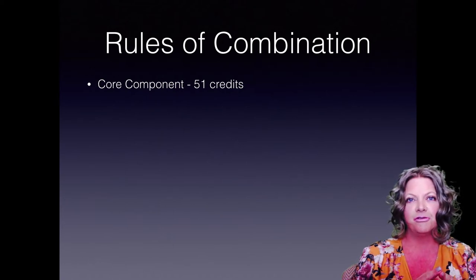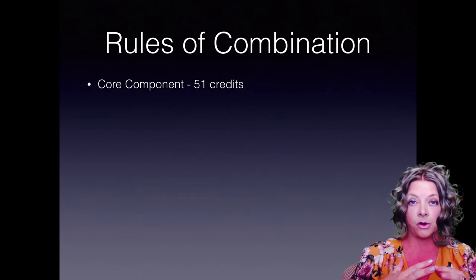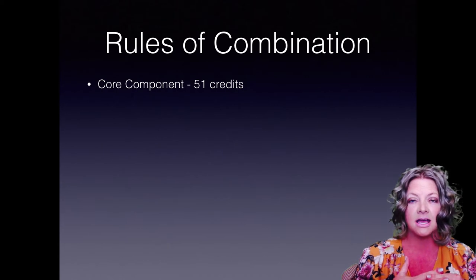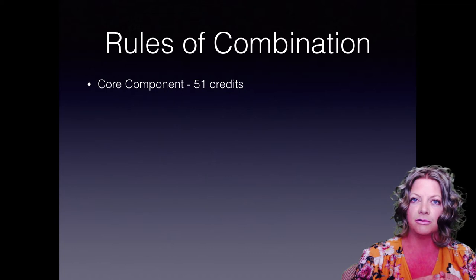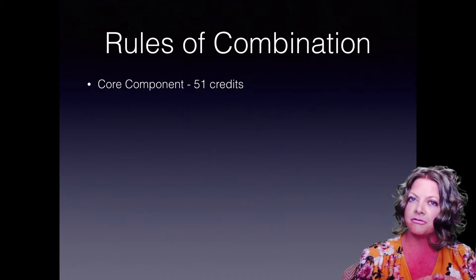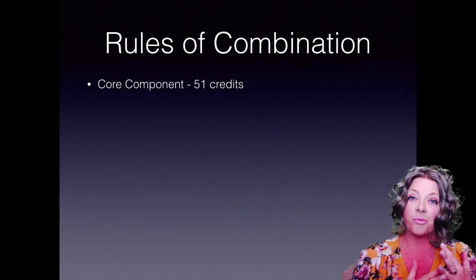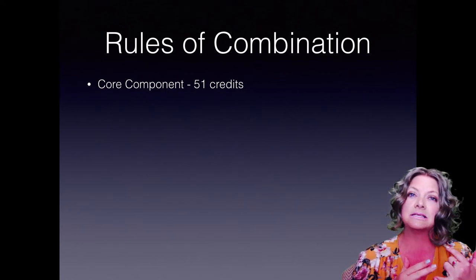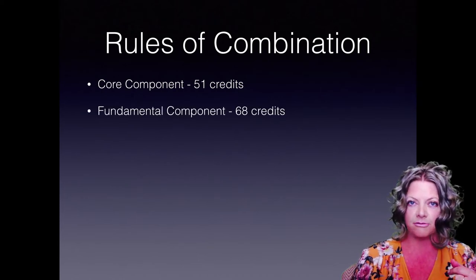To award a full qualification, we need to ensure the credits you have achieved plus the balance of credits we assess you against meet the rules of combination. This specific qualification — the FETC Short-Term Insurance at NQF Level 4 — consists of 150 credits on NQF Level 4. The core component is 51 credits, and these are all compulsory unit standards which you must complete to attain the full qualification.